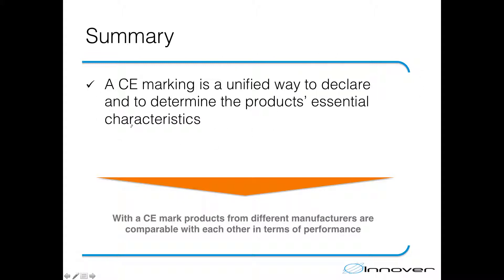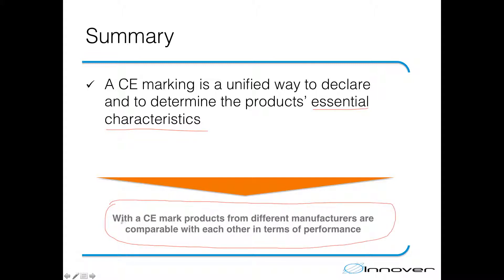These characteristics are listed in the standards, so manufacturers don't have the ability or freedom to decide what characteristics to present in the CE marking — these are given in the standard. This leads directly to the conclusion that with CE marking, products from different manufacturers and products manufactured in different EU countries are comparable with each other in terms of performance — not in terms of quality, but in terms of performance with relation to the essential characteristics given in the CE mark.